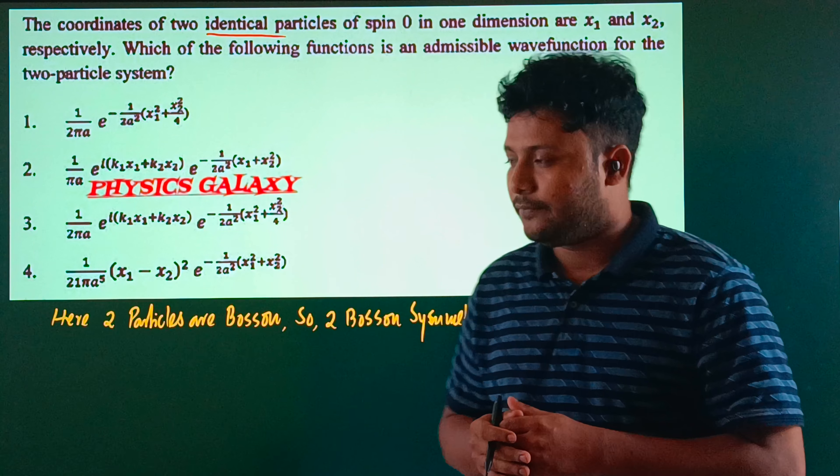For the interchange test, ψ(x2,x1) = 1/(21πa³) (x2-x1)² exp[-(x2²+x1²)/(2a²)]. This is symmetric because (x1-x2)² equals (x2-x1)², and x1²+x2² equals x2²+x1². So option 4 is symmetric and is the correct answer. Thank you.